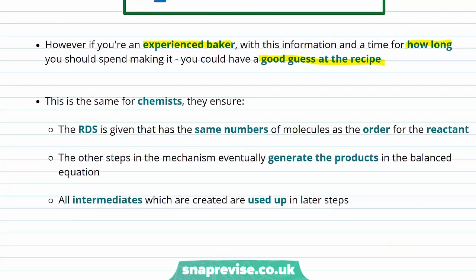It's the same for chemists. If they're given an overall reaction equation, so they know which reactants are turning into which product, and they also know the rate equations, they know what affects the rate, they have a good chance of being able to work out the mechanism. They ensure that the rate determining step has the same numbers of molecules in it, or relating to it, as the order of each of the reactants. And then the other steps in the mechanism must generate the products in the balanced equation. We must get to the final product somehow. Any intermediates that are created along the way need to be used up at some point in these later steps.